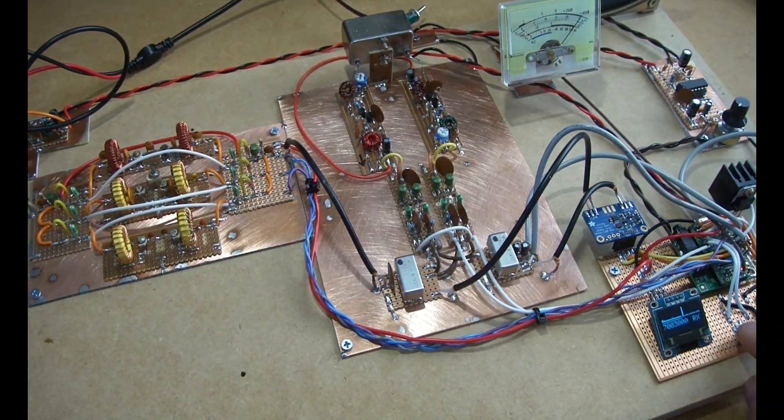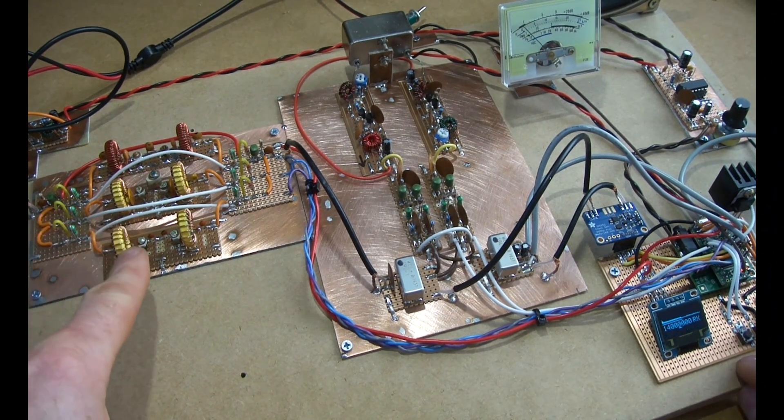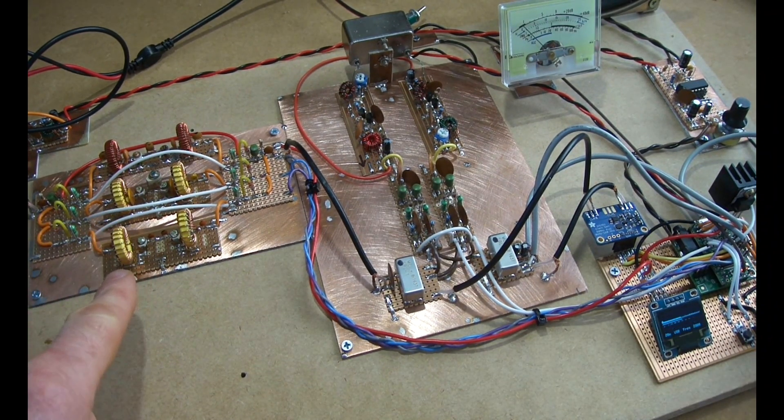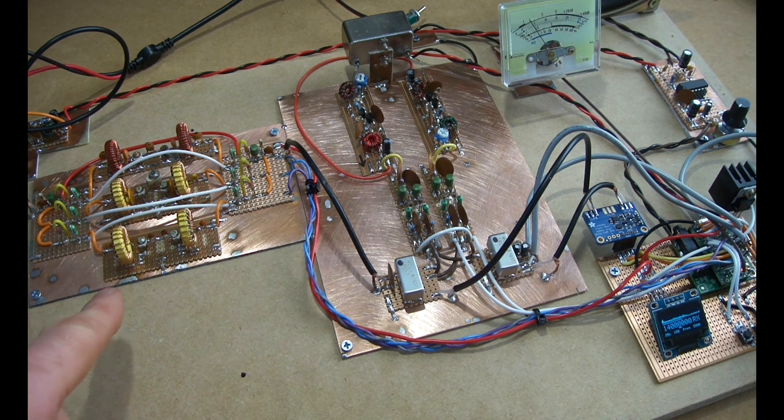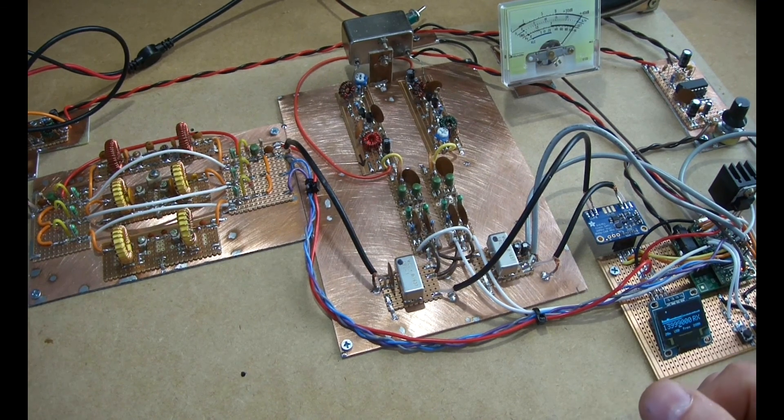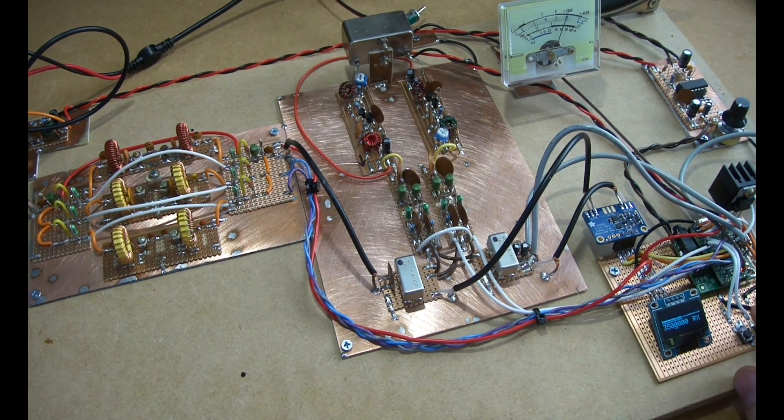And then if we go up to the 20 meter band, now this bottom filter's in play, and if we crank this up to 14 megs, then we'll start to see that come through now. So that's working quite happily, and then it just cycles back through again.